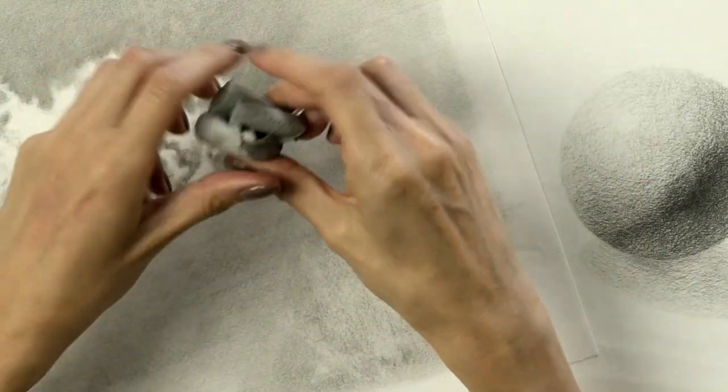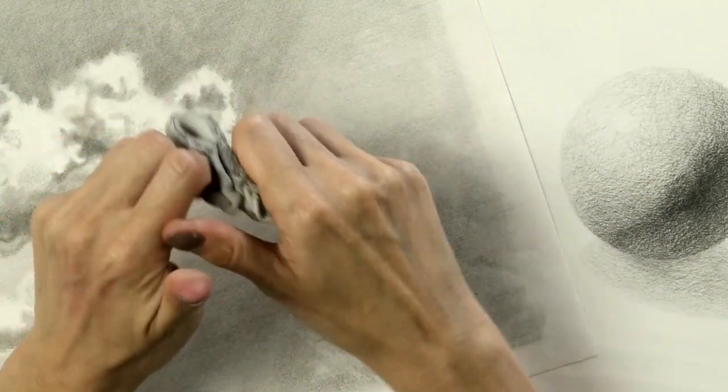It's called the kneaded eraser because you need to knead it. You're going to tear it up—it's almost like a putty. Moms, be aware that this will stick to your children's hair, the dog's hair, the cat's hair, or the carpeting.